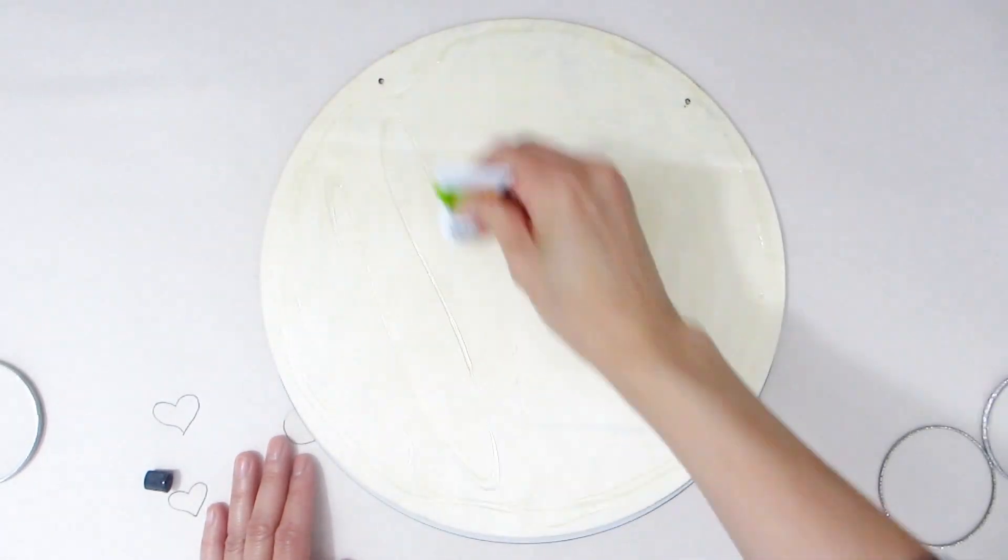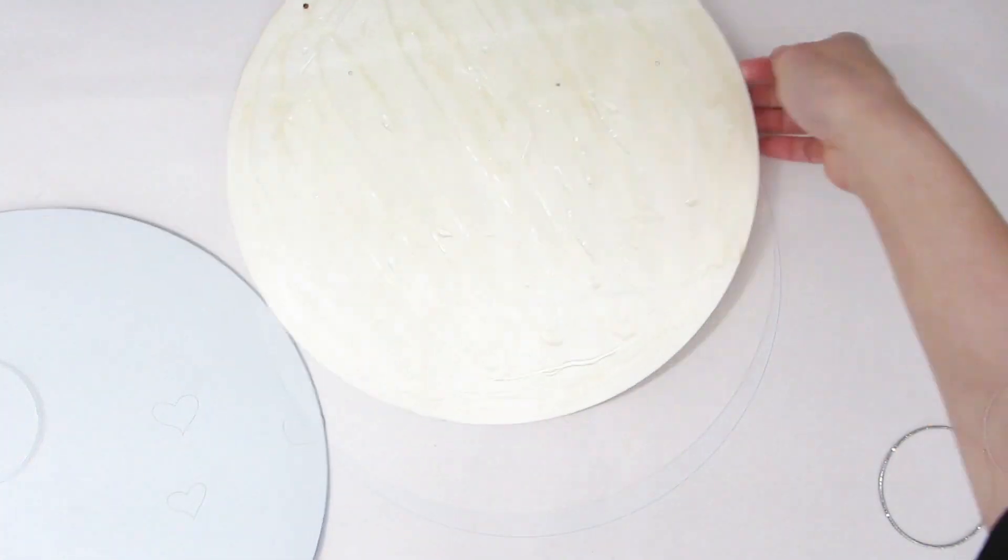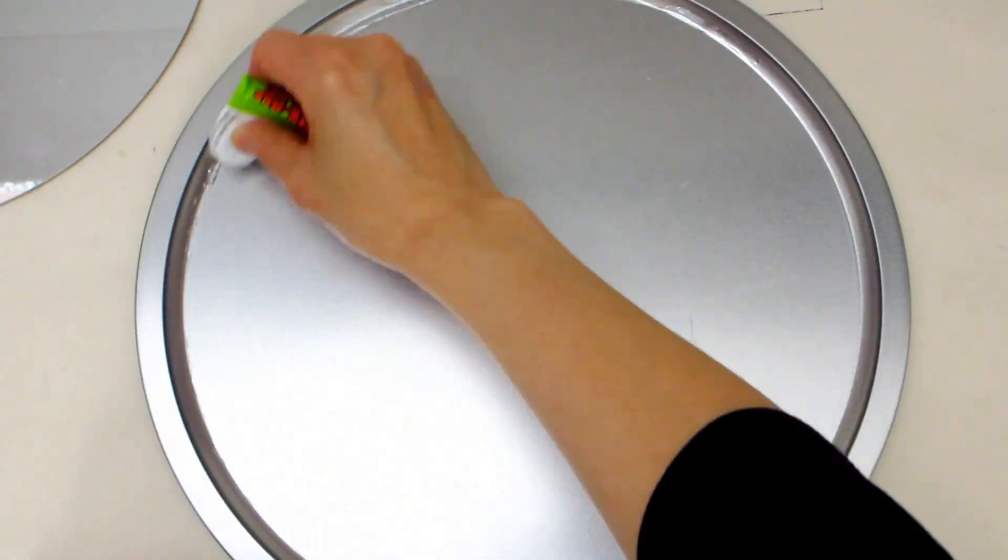And here I'm applying a substantial amount of Fix-All to a wood panel before setting it to the back of a mirror that will be hung on a wall.